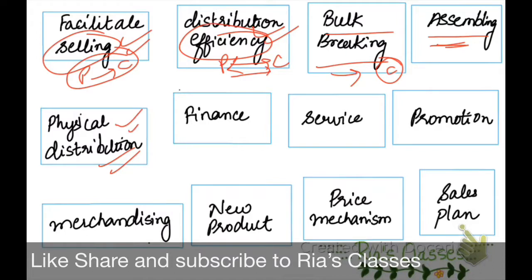The distribution channel also looks into Finance. Whatever financial burden is associated with distribution, the channel helps manage it. For example, if customers need credit, retailers in the distribution channel will provide credit facilities. The distribution channel thus handles important financial functions.